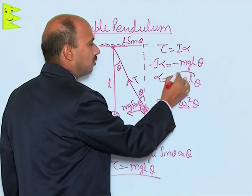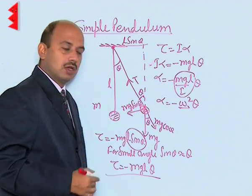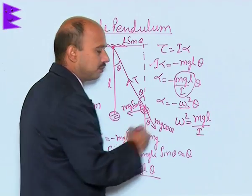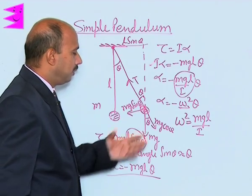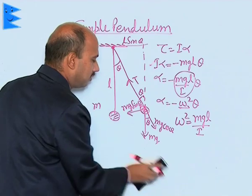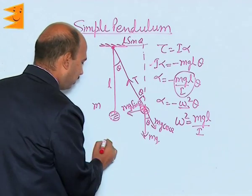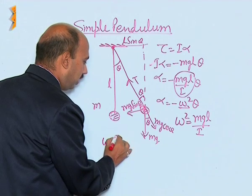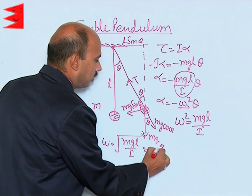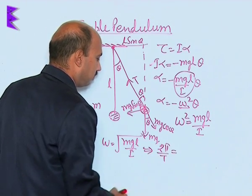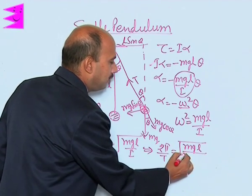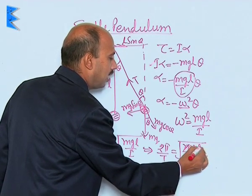This means omega squared is equal to m g L upon I. So we can write omega squared is equal to m g L upon I. Now we can calculate the time period using this. We get omega is equal to the square root of m g L upon I, and we can write 2 pi upon T is equal to the square root of m g L upon I. The moment of inertia I can be written as m L squared, so m cancels and one factor of L cancels.